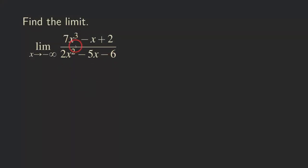This time we have a degree in the numerator that's larger than the degree for the denominator. The usual strategy is to factor out the highest power of x and see what's going on. So we're going to start by factoring out x cubed from the numerator, since that's the highest power of x.